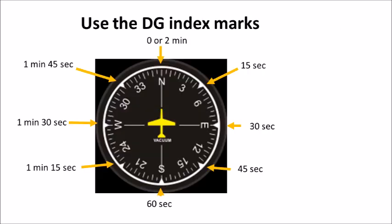Another element of this drill is to practice the use of the index marks on your directional gyro. I really encourage students to get used to using these index marks — they're very helpful in a lot of different situations. During the timed turn drill we can interpret the index marks on the directional gyro and correlate them with elapsed time. A reference heading will pass an index mark every 15 seconds.